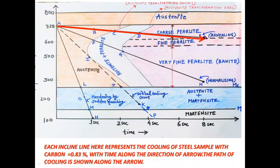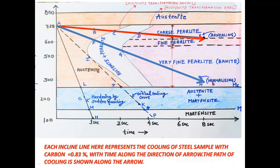If we increase the cooling rate to 50 degrees Celsius per second and go along arrow AH, starting from point A with initial temperature slightly above 723 degrees Celsius, we follow the same procedure. The final microstructure obtained in this case will be very fine pearlite, because the end of the arrow at point H lies in the purple color region, which denotes very fine pearlite, that is bainite. This process is called normalizing.